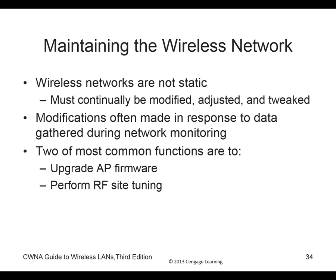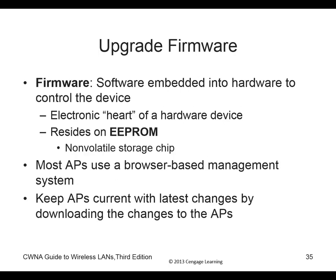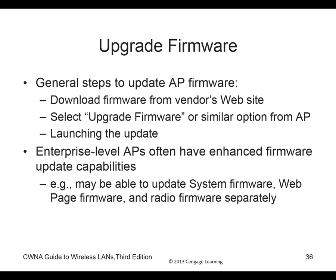Maintaining the wireless network: wireless networks are not static — they must be modified, adjusted, and tweaked, often in response to data gathered during network monitoring. Upgrading firmware is important because outdated firmware can have vulnerabilities. The EEPROM is where NVRAM is stored. General steps: download firmware from the vendor's website, select 'upgrade firmware,' and it updates. Never turn off your WAP while upgrading — doing so renders it useless.